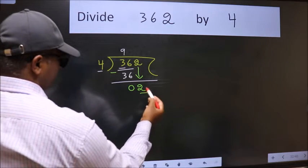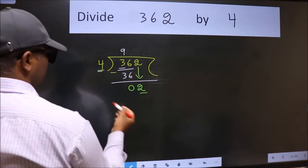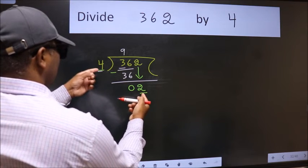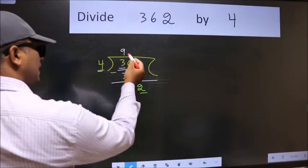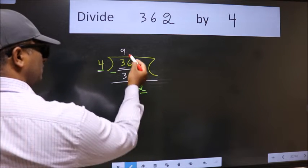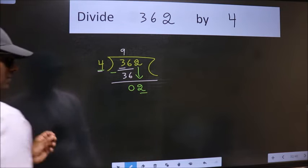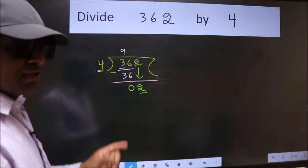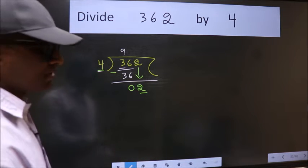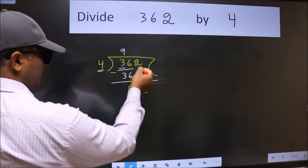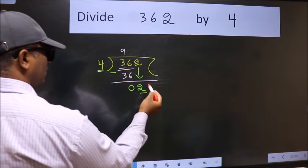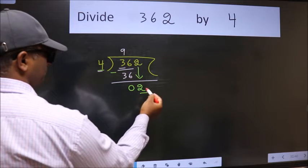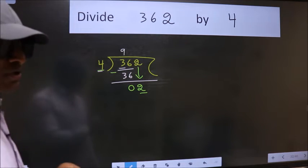Here we have 2 and here 4. 2 is smaller than 4. So what many do is they directly put dot, take 0, which is wrong. Why is it wrong? Because just now you brought this number down, and in the same step you want to put dot, take 0, which is wrong.